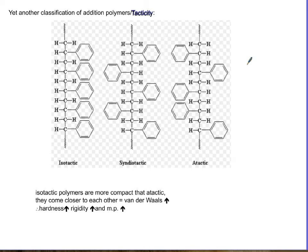The second classification for addition polymers is known as tacticity, and this talks about the orientation of the side chains on the hydrocarbon backbone. It's really simple: if all the side chains are on one side...